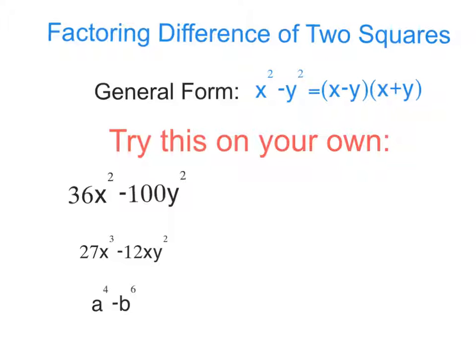And here we have a couple try-this-on-your-own problems. So number 1, 36x squared minus 100y squared. 2, 27x cubed minus 12xy squared. And 3rd, a to the 4th minus b to the 6th. Always remember to factor your GCF first. You want to do the greatest common factor first. It will make the problems a lot easier. So be sure to do that. Good luck.